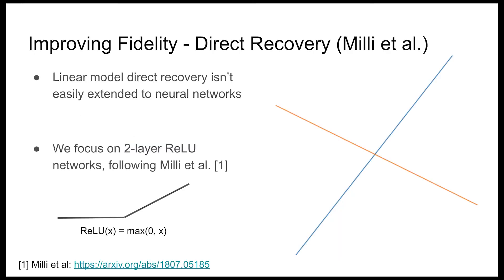In order to overcome this, we turn to direct recovery. The linear model approach doesn't really extend to neural networks, but fortunately Milli et al. at FAT* 2018 show how to do this with two-layer ReLU networks. A ReLU, if you're not aware, takes the input and if it's positive does nothing to it, and if it's negative squishes it up to zero. I'm going to describe the main idea of the Milli et al. work and a little bit of how we improve on it, but if you want more details you'll have to see the paper.